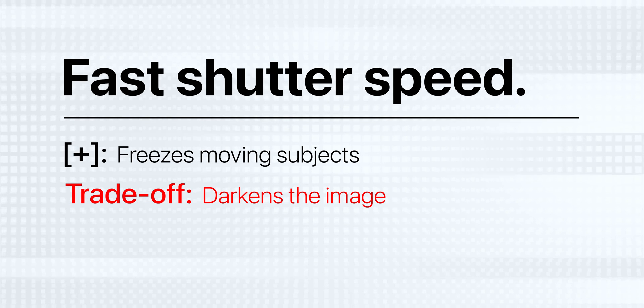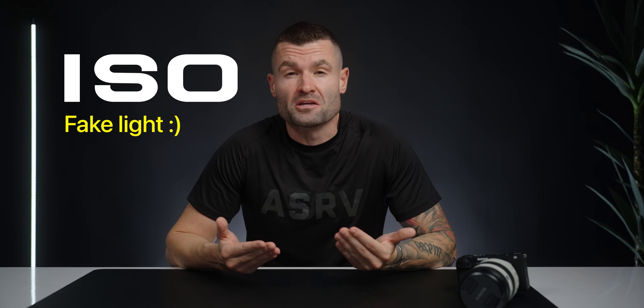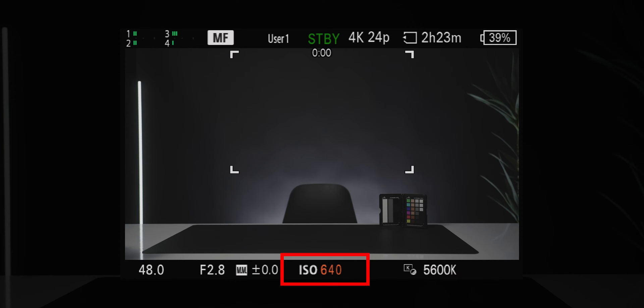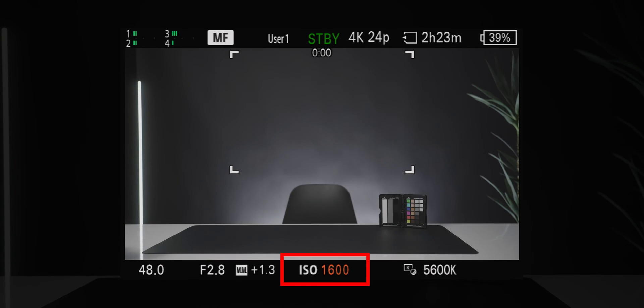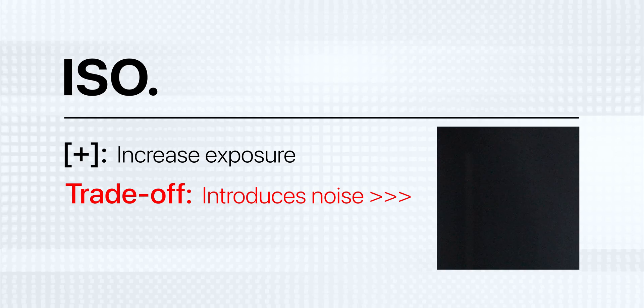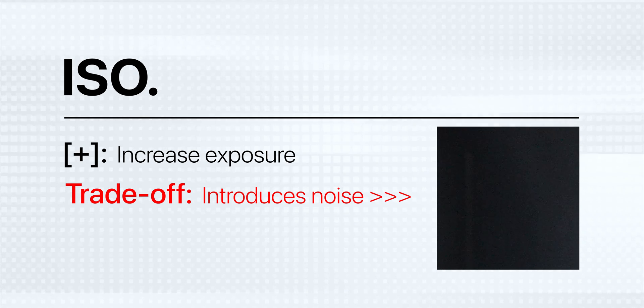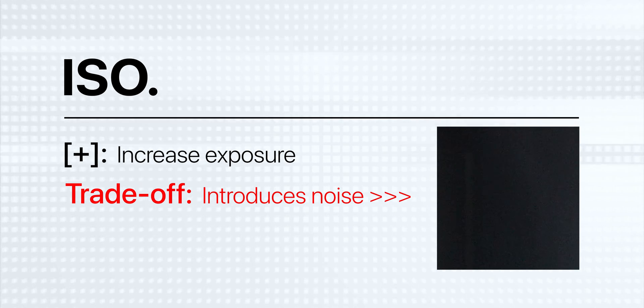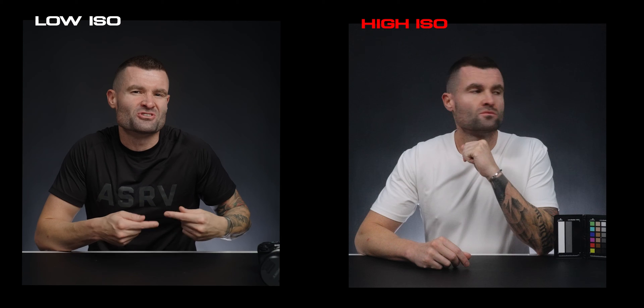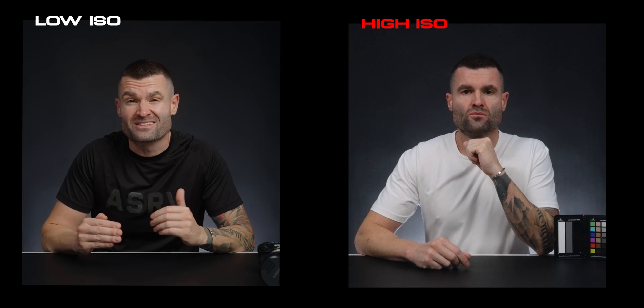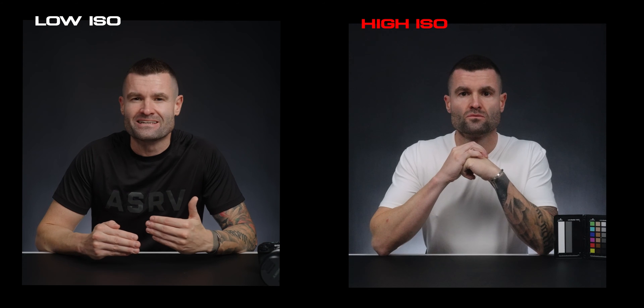The only trade-off to fast shutter speeds is that they're going to darken the image and bring down our exposure. We can bring our exposure back up with our next point: ISO. ISO stands for International Standard — essentially it's how we introduce artificial brightness onto the sensor, which can be really helpful for getting our exposure right. The lower the ISO, the darker the image; the higher the ISO, the brighter the image. But it does come with a cost — as we increase our ISO, we run the risk of introducing noise into our images or videos, which can make them appear softer, cause color shifting, and just make your images not as clean as you'd want.